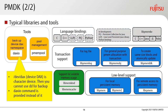Another library is a high-level library supporting transactions for objects on DAX. It is for general use cases and is the most highly recommended library in PMDK, though users need to understand how to use each transaction. The next tool is DAXIO. Since /dev/daxN is a character device, you cannot use dd for backup — DAXIO is provided instead.